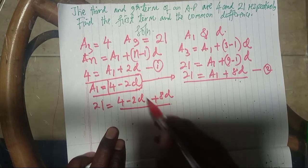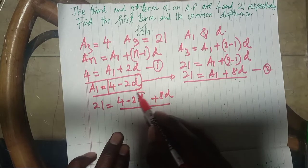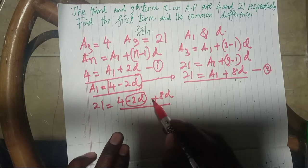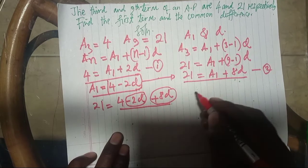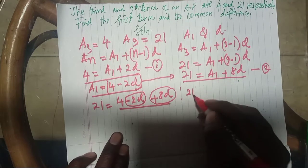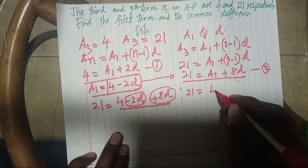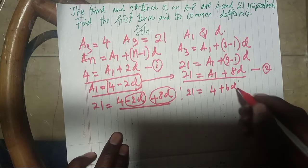This is what I have. Then collect the like terms, that is negative 2D and that is positive 8D. All of these are collected, where we get 21 equals 4 plus 6D.